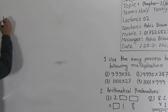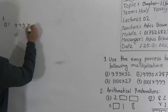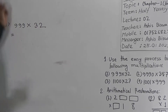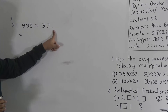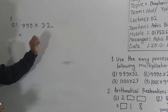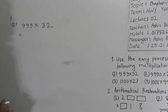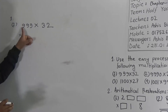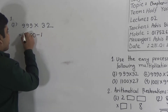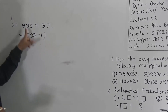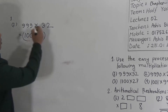Let us start to solve number 1. Here 999 is multiplied by 32. We can multiply this by ordinary method, but here we use the easy process. So 999 can be written as 1000 minus 1. If we subtract 1 from 1000, we get 999. Now multiply this by 32.